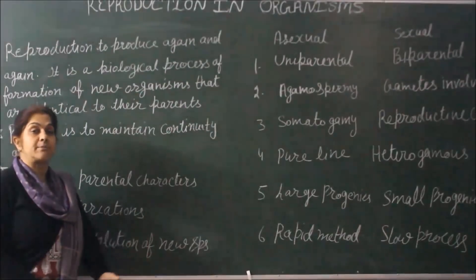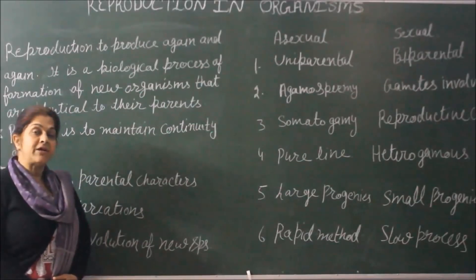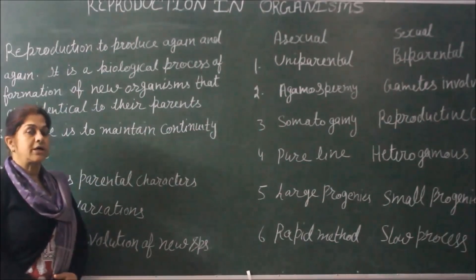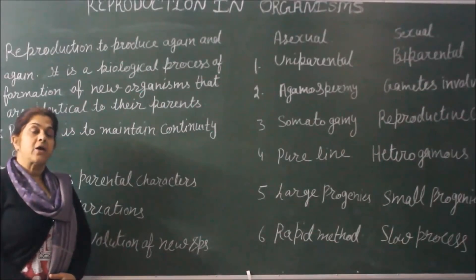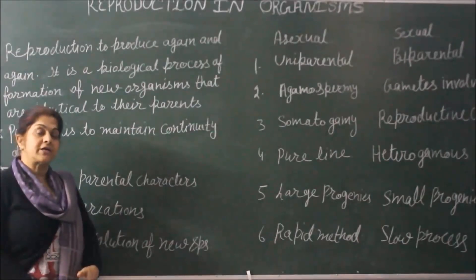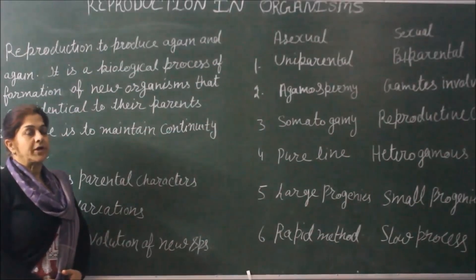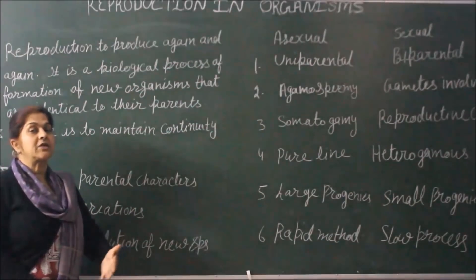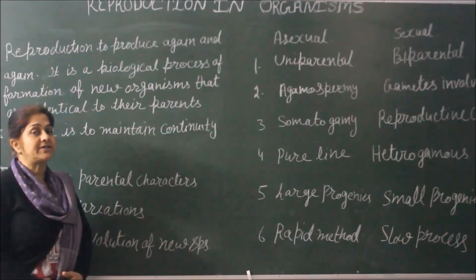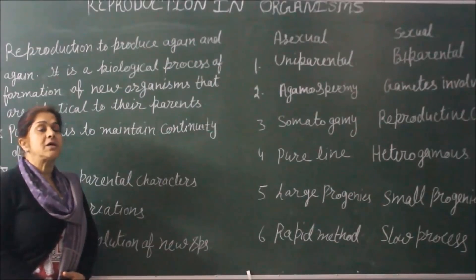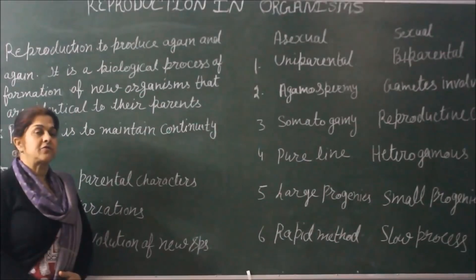For example, an elephant will always give birth to an elephant. Dogs, tigers, and cats all produce young ones that are genetically similar to themselves. This means there is reproductive isolation between species — meaning a species can only reproduce amongst themselves.